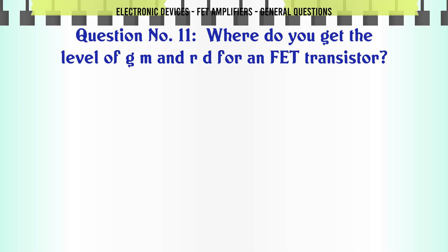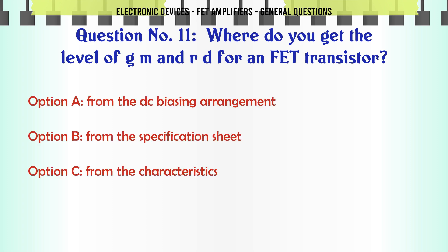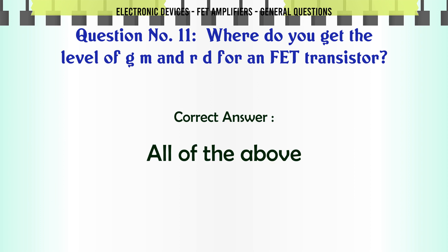Where do you get the level of GM and RD for an FET transistor? A. From the DC biasing arrangement. B. From the specification sheet. C. From the characteristics. D. All of the above. The correct answer is all of the above.